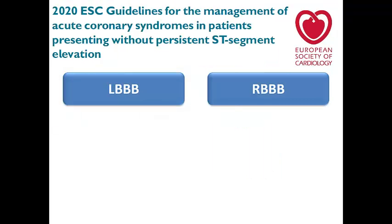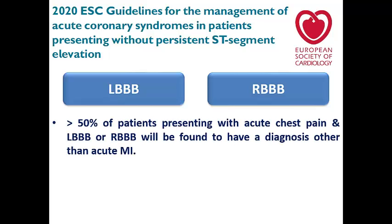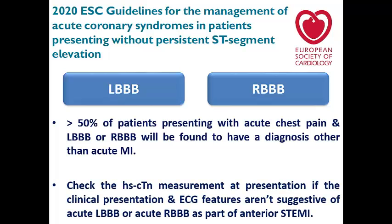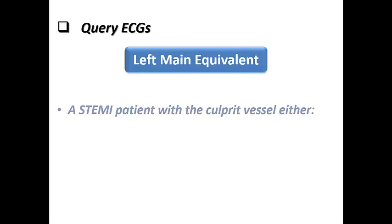The 2020 ACC/AHA guidelines for non-ST elevation acute coronary syndrome note that more than 50% of patients presenting with acute chest pain and LBBB or RBBB will be found to have a diagnosis other than acute MI. When the ECG is not suggestive and clinical presentation is not convincing, check high-sensitivity troponin at presentation and follow up with serial ECGs to look for dynamic changes. If markers are not elevated and ECG and clinical presentation are static, continued follow-up is appropriate. Always integrate clinical sense, serial ECGs, and biomarkers to decide.